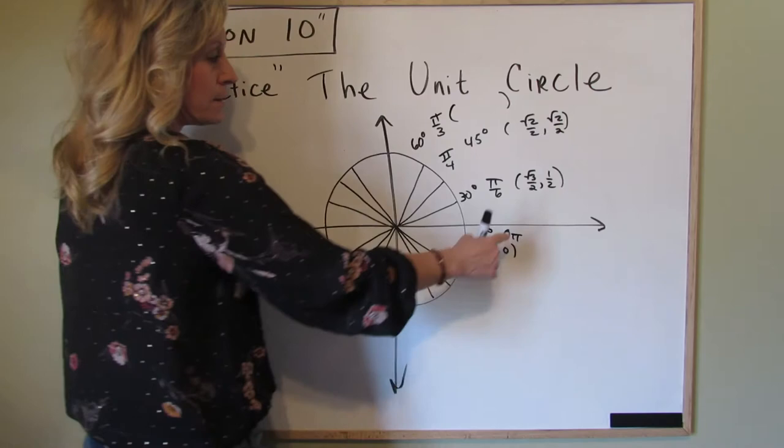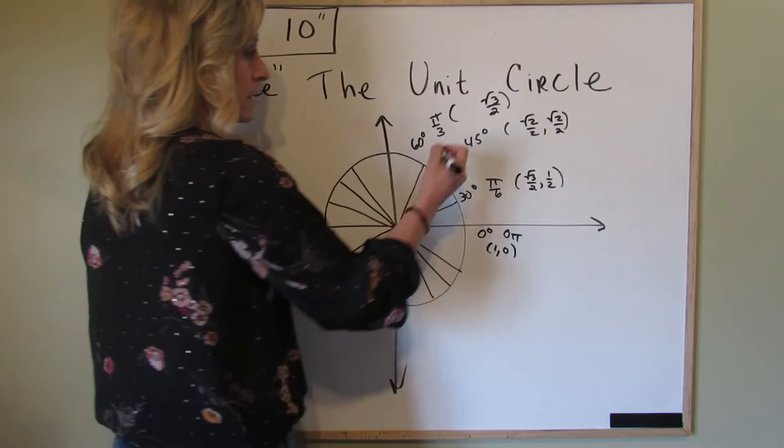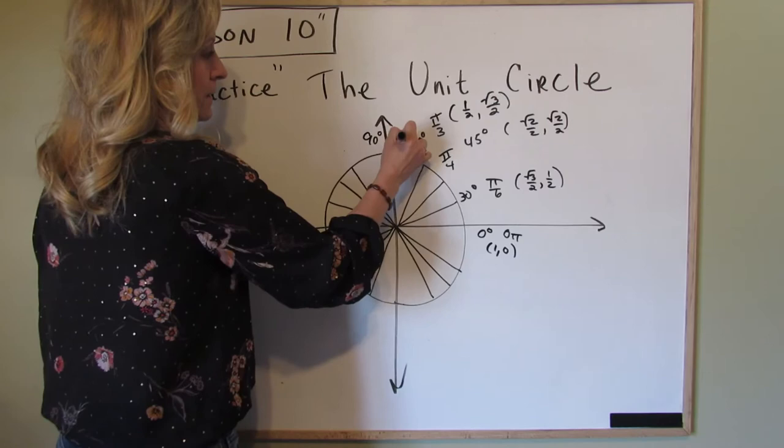Coming around the circle we have 60 degrees which is pi over 3. If you remember that the cosine for 30 is the square root of 3 over 2, the sine for 60 is the square root of 3 over 2. And if you remember the sine for 30 is 1 half, the cosine is 1 half. Then we come up to 90 and that's pi over 2, and it's 0, 1.